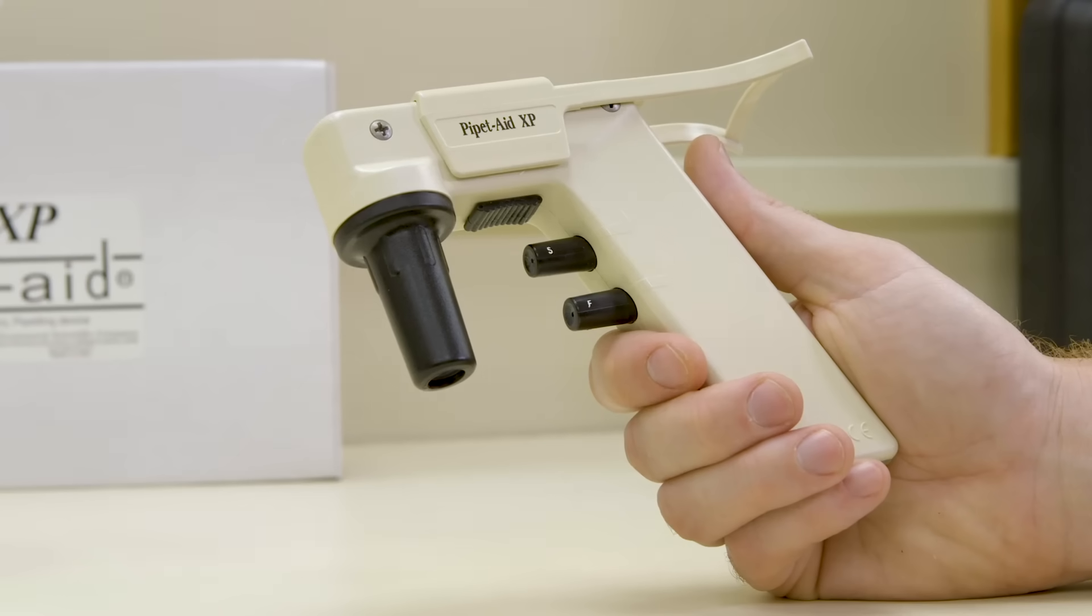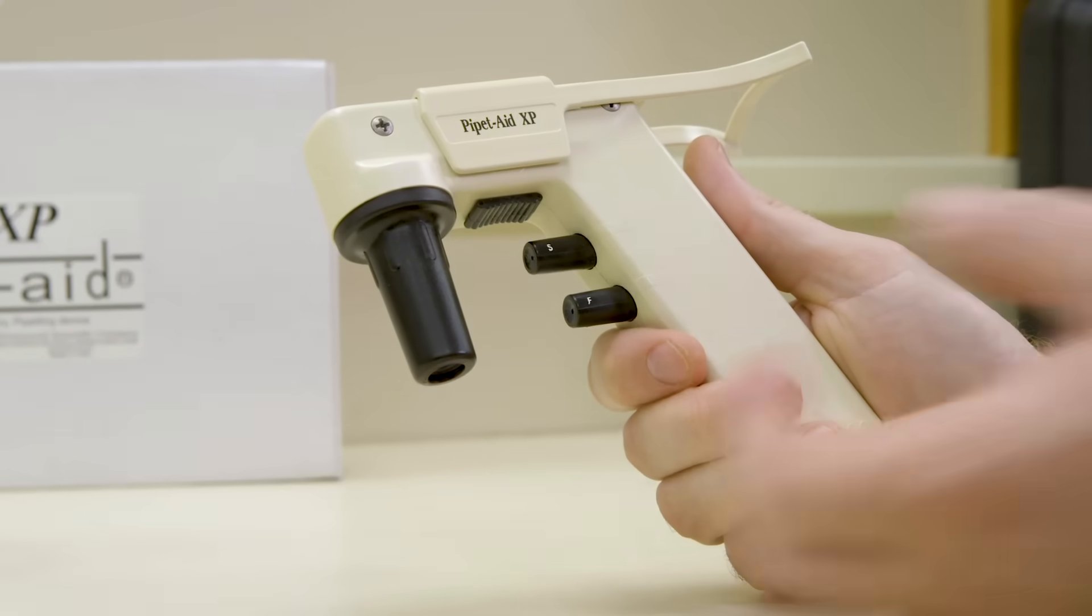When held in the right hand, you must be able to see either an S, M, or F indicating your current speed range. As you rotate the buttons, you should feel resistance followed by the button clicking into place.